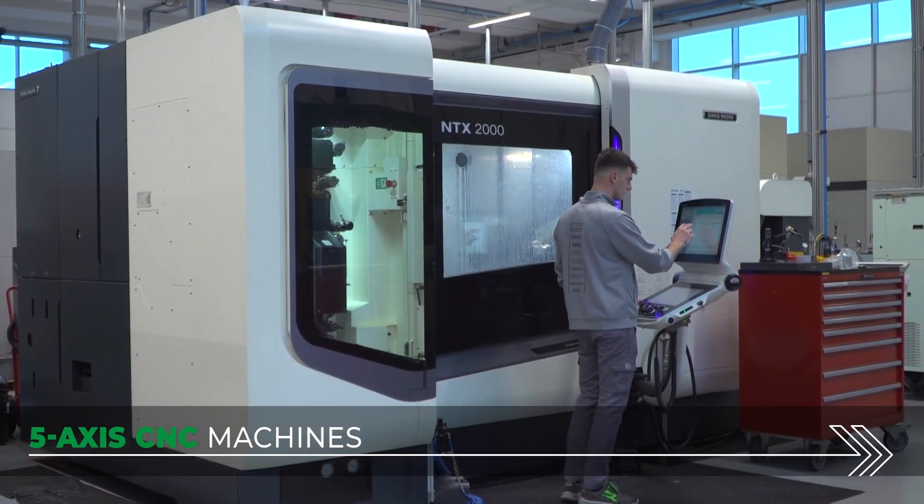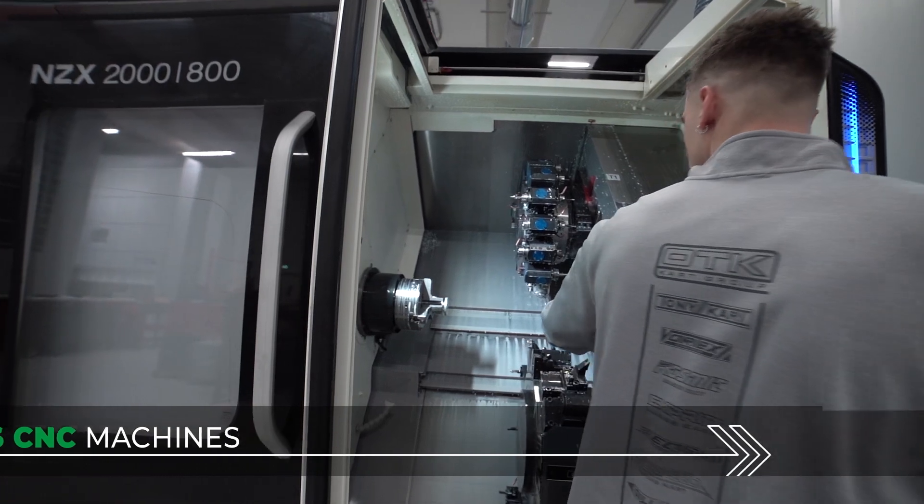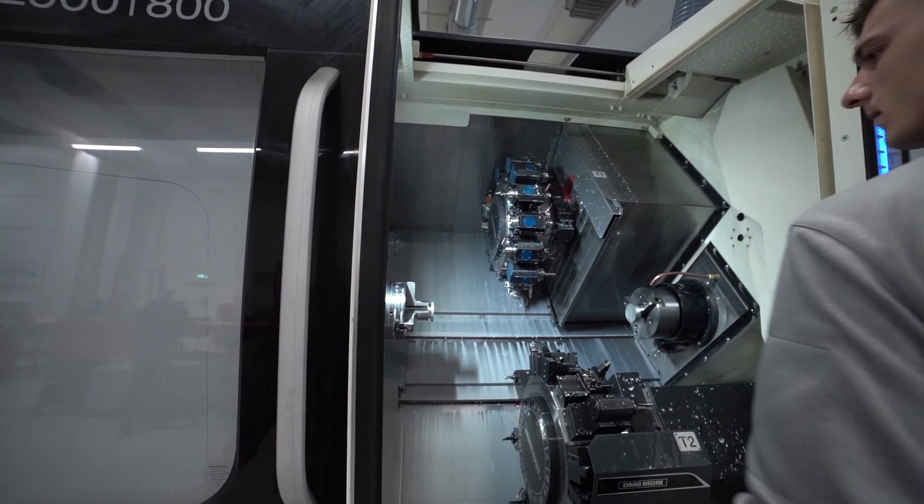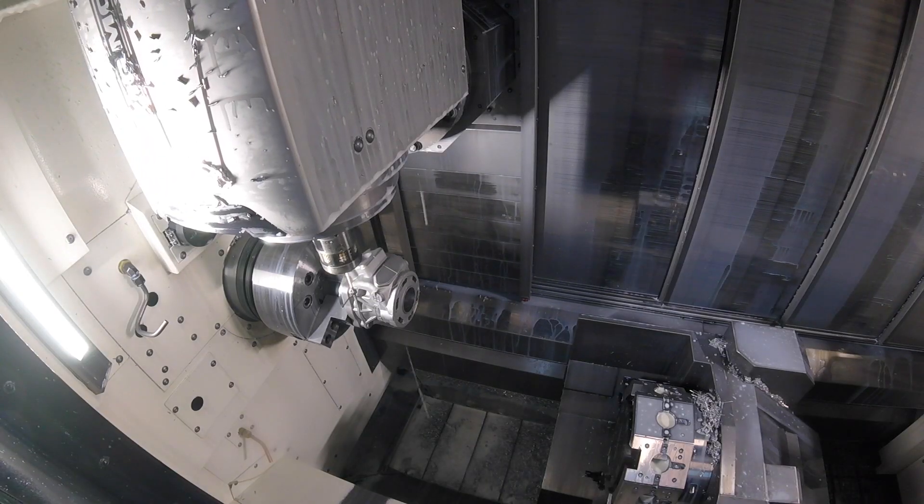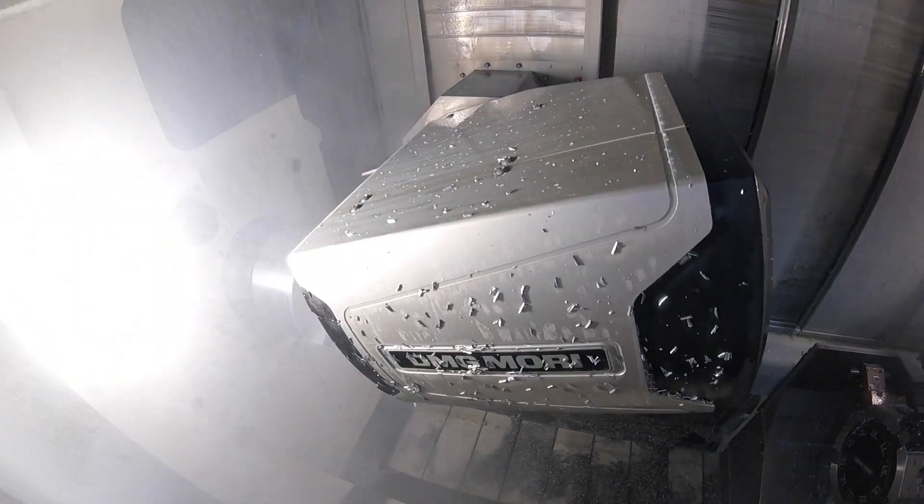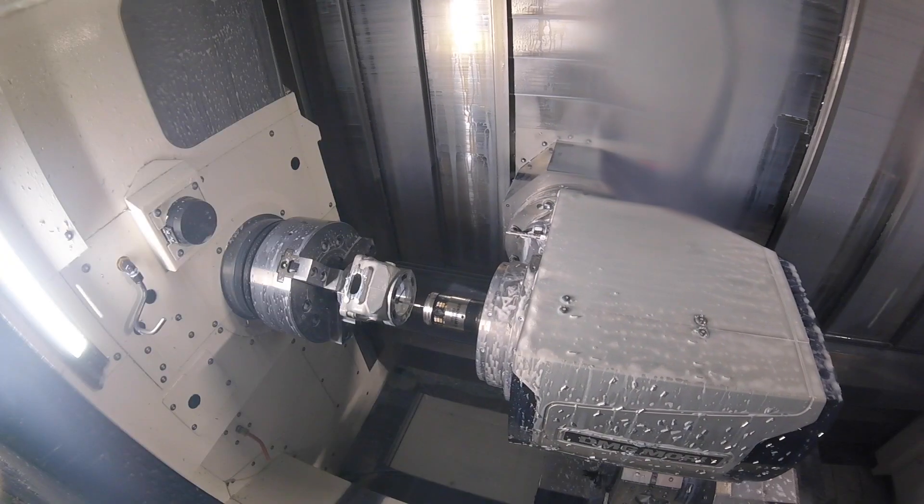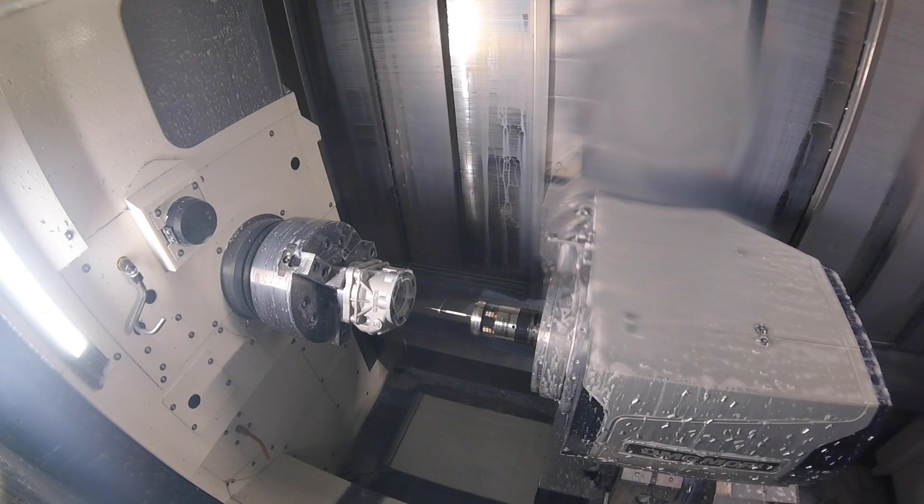Five axis CNC machines allow for the most complex machining operations to be carried out. Thanks to multi-directional movements, they are literally capable of three-dimensional sculpting of various raw components.